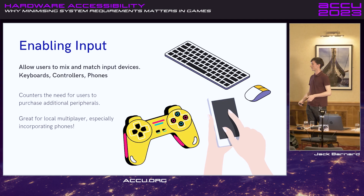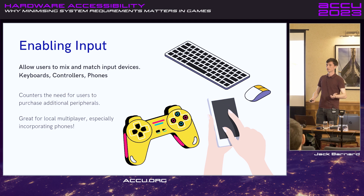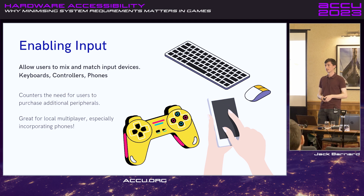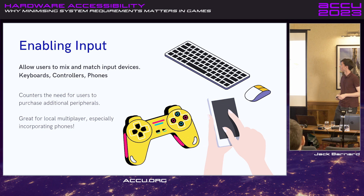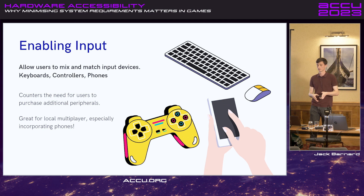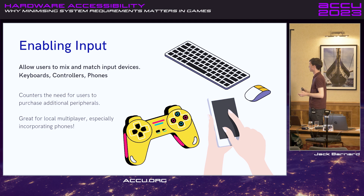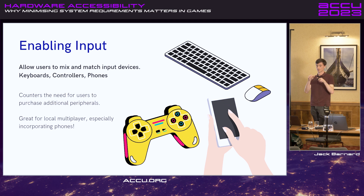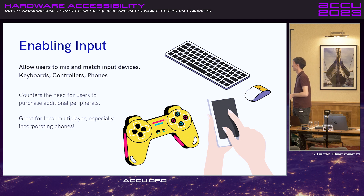Enabling input is about allowing users to choose what kind of input device they want to use to play their games and software. It counters the need to purchase additional peripherals — for example, at a LAN party where people need additional controllers. One great solution is allowing users to use their mobile phones as input devices to control games, since everyone these days has a mobile phone.